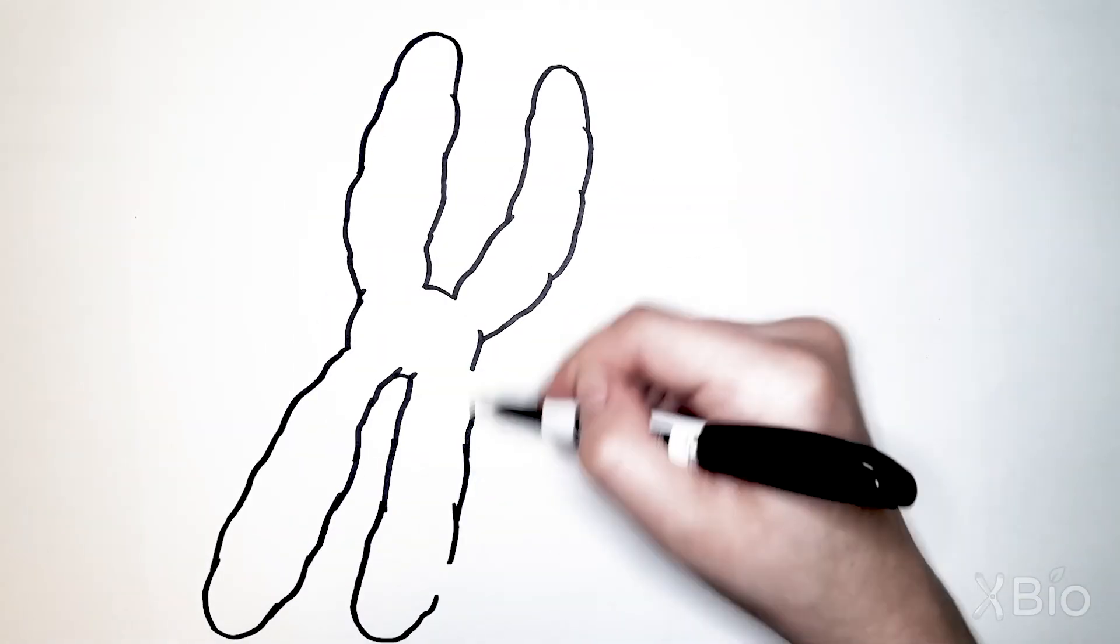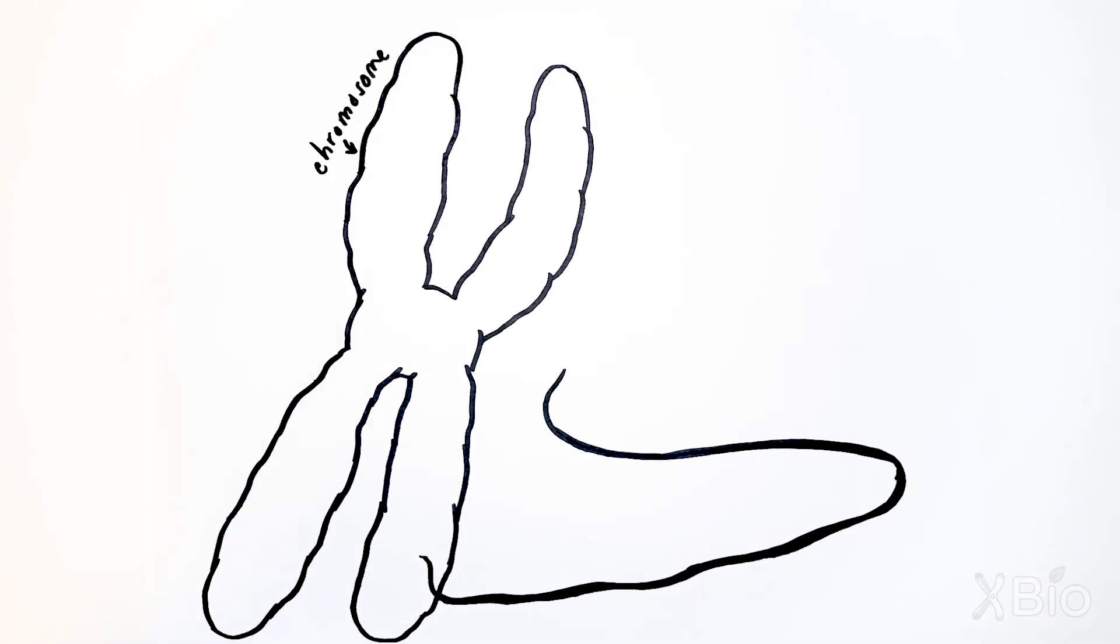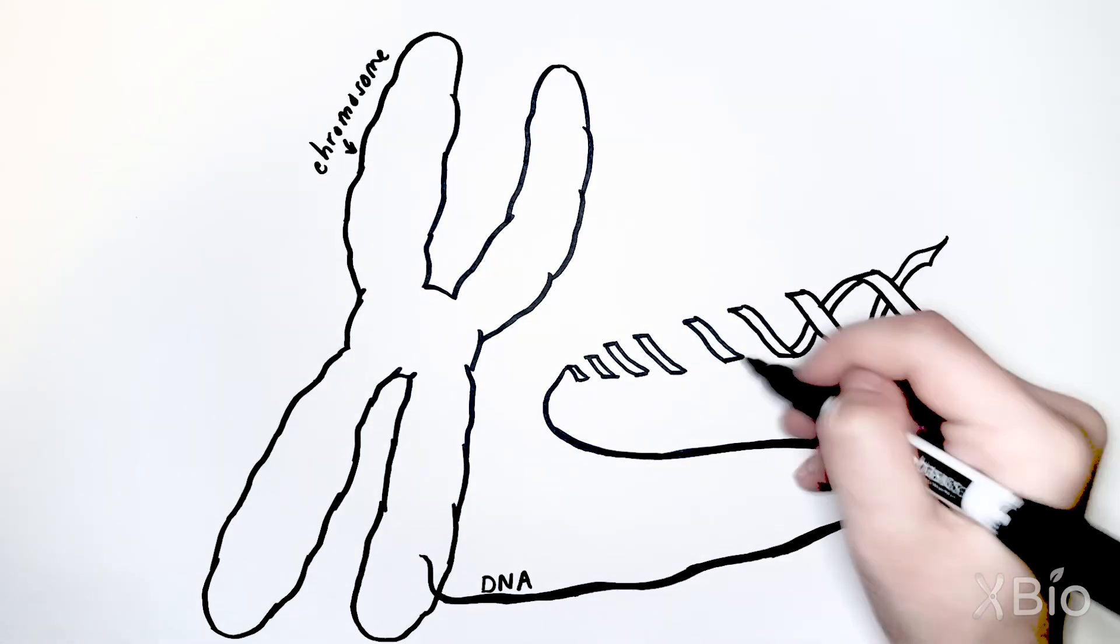DNA in cells exists in discrete units called chromosomes. Each chromosome is made up of one very long piece of double-stranded DNA that has thousands of genes.